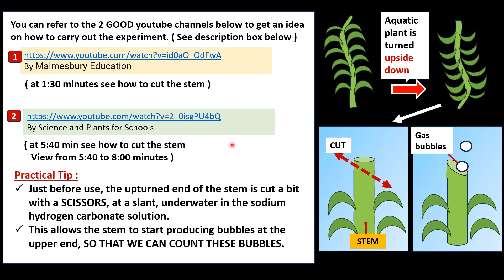Read the question carefully. I want to stress: if the question has instructed you to do another method, you follow the method given in the question paper. Unless there's no method given and you have trouble getting the bubbles to appear, then this is a technique used and recommended by these educators. In fact, these educators are probably teaching GCSE science, and their notes mention this technique of turning the plant upside down and cutting the stem in a slanted way underwater.